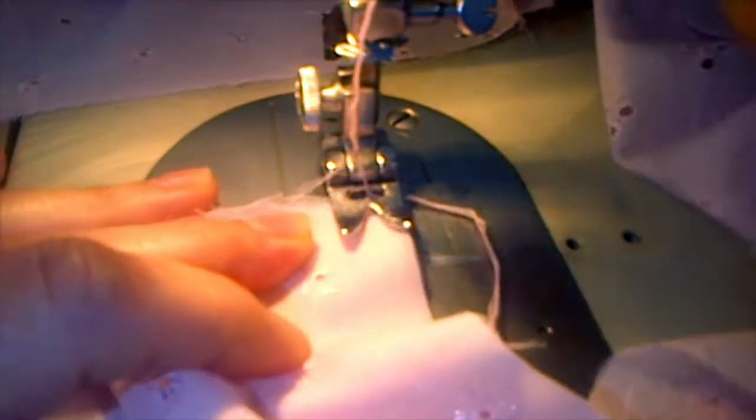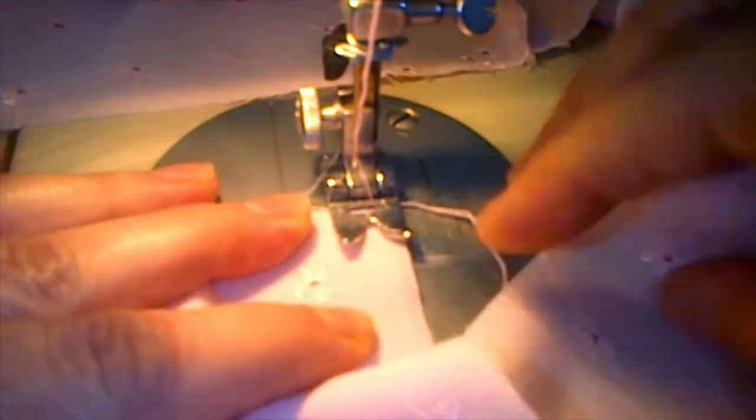Our first step is to attach binding to the slit. Take a 12 inch long and about one and a fourth inch wide strip and attach it to the wrong side of the slit.